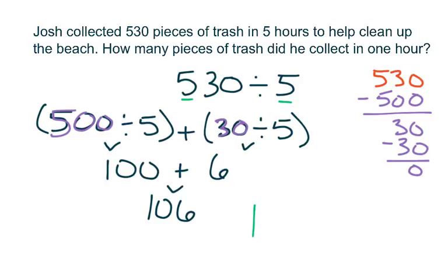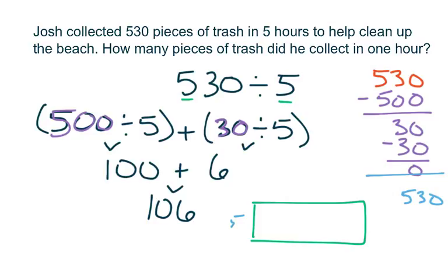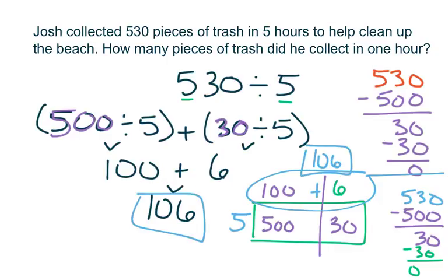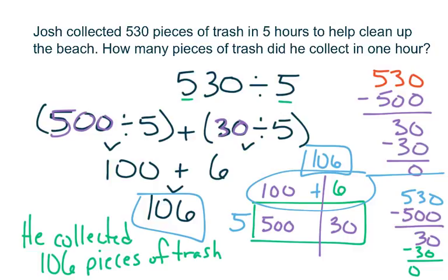I'm going to check my work using the area model. I draw a rectangle, take my 530 off to the side, and place my divisor of 5 on the side. I need to think about 5 facts getting me close to 530. 5 times 100 gives me 500, so I subtract 500 and I'm left with 30. Then 5 times 6 gives me 30, so I subtract 30 and I'm left with 0. Adding my two partial quotients together, I have 106 as my answer — the same as my distributive property. The question asked how many pieces of trash did Joshua collect in one hour. He collected 106 pieces of trash. Way to go, Josh — that's a lot of trash!